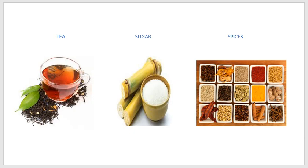Now we will see other food items that we get from plants. We get tea from plants. If you go to Ooty, you can see tea plantations and tea factories where you can visit and see how tea is prepared. These are the tea leaves, which are dried and made into tea dust, which is used to make tea. So we get tea from tea leaves.